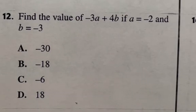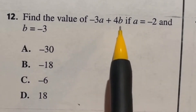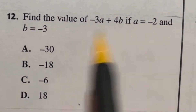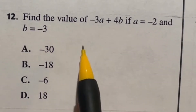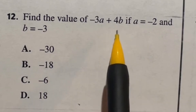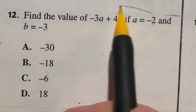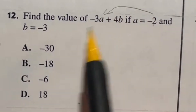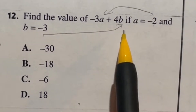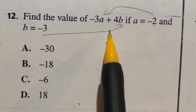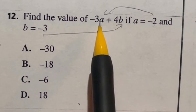Number 12 on the ASVAB says: find the value of negative three A plus four B if A is negative two and B is negative three. This is your standard plug-and-chug question. We're going to take negative two and plug it in for A, and take negative three and plug it in for B.